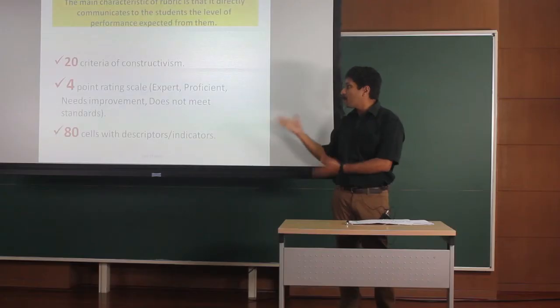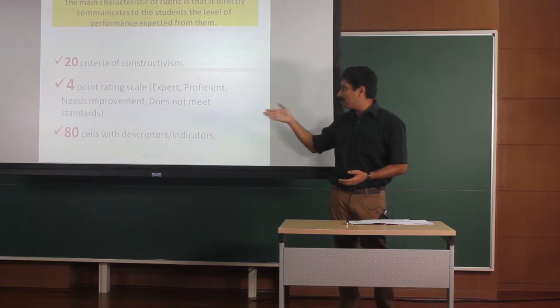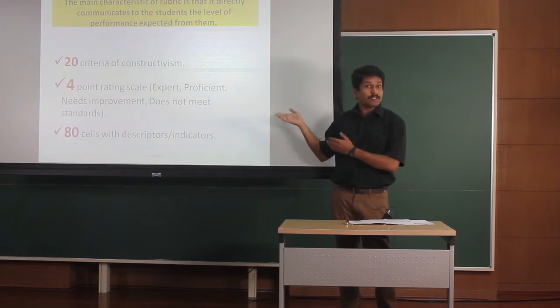Which rates a student teacher from expert, proficient, needs improvement, does not meet standards. And 20 into 4, 80 cells, each cell having a descriptor.